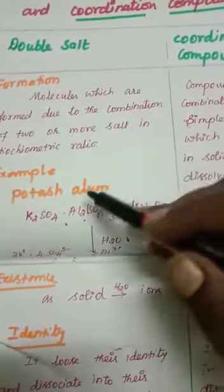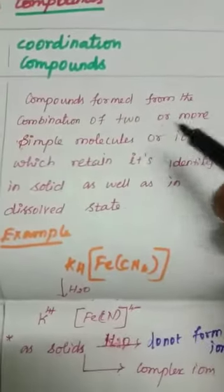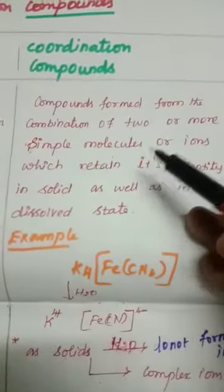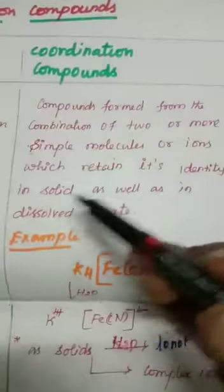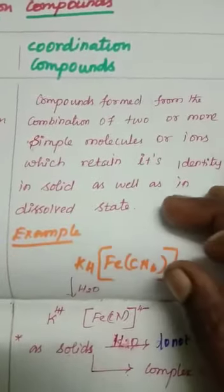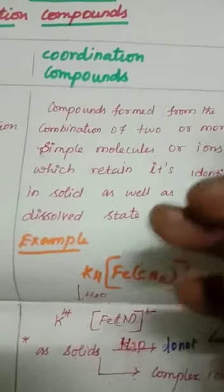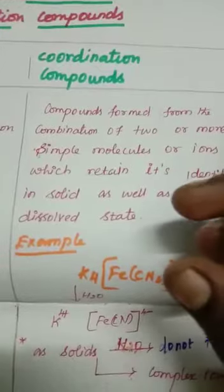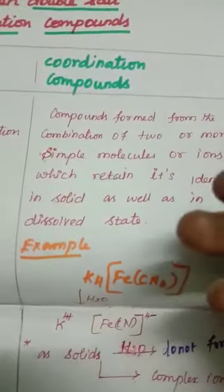Coordination compounds are formed from the combination of two or more simple molecules or ions, which retain their identity in solid as well as in dissolved state. So coordination compounds are also formed from two or more simple molecules or ions, but these compounds retain their identity in solid state as well as in dissolved state.